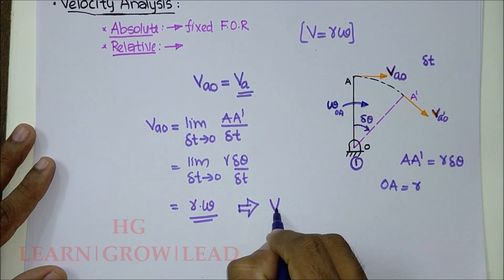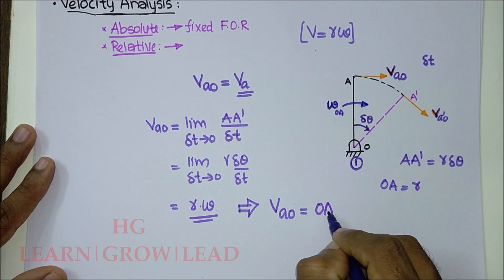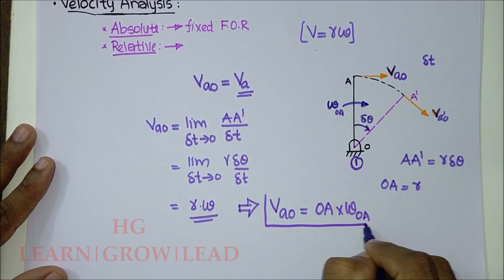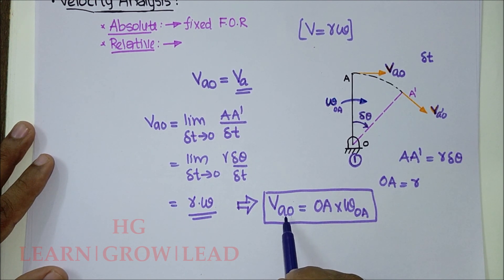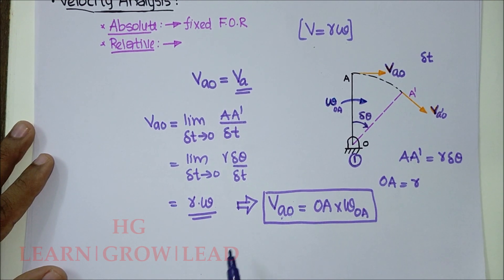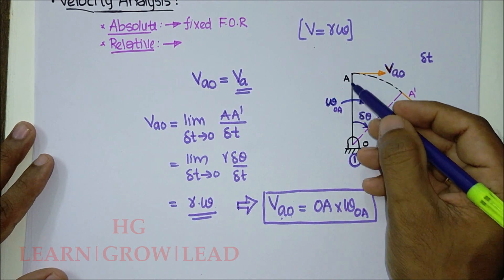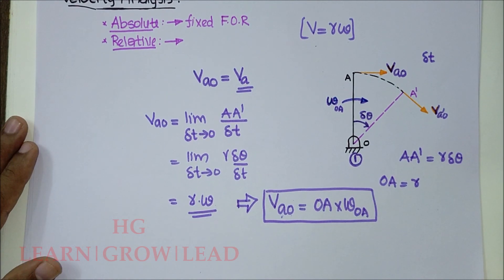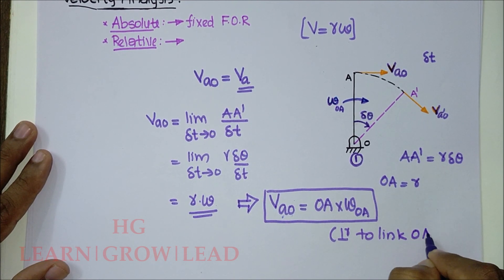Specifically, the velocity of point A with respect to O equals the radius OA times omega-OA. This is the velocity expression: you specify which point is moving and which is the reference point. The distance from the reference point O to the moving point A is OA, and the angular velocity is omega-OA.